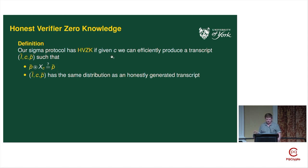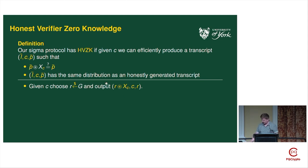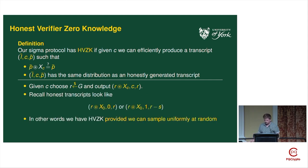Honest verifier zero knowledge means we should be able to produce a transcript without knowledge of the secret s — given some challenge — that passes and is distributed the same as an honestly generated transcript. This models that you don't learn anything from seeing the transcript. This works provided that you're sampling r uniformly at random from the group, giving the same distribution. But it does rely on our ability to sample uniformly at random.